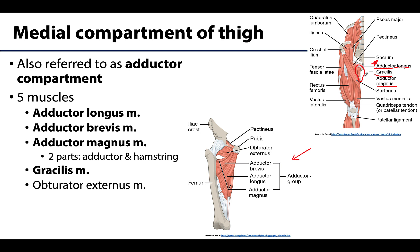Locating adductor brevis takes a bit more dissection as it is deep to the adductor longus for some of its portion. You can see adductor brevis right here, but it is also deep to the pectineus muscle, which has been removed here. So if you're looking at a straight anterior view without any deeper dissection, it's really not visible.